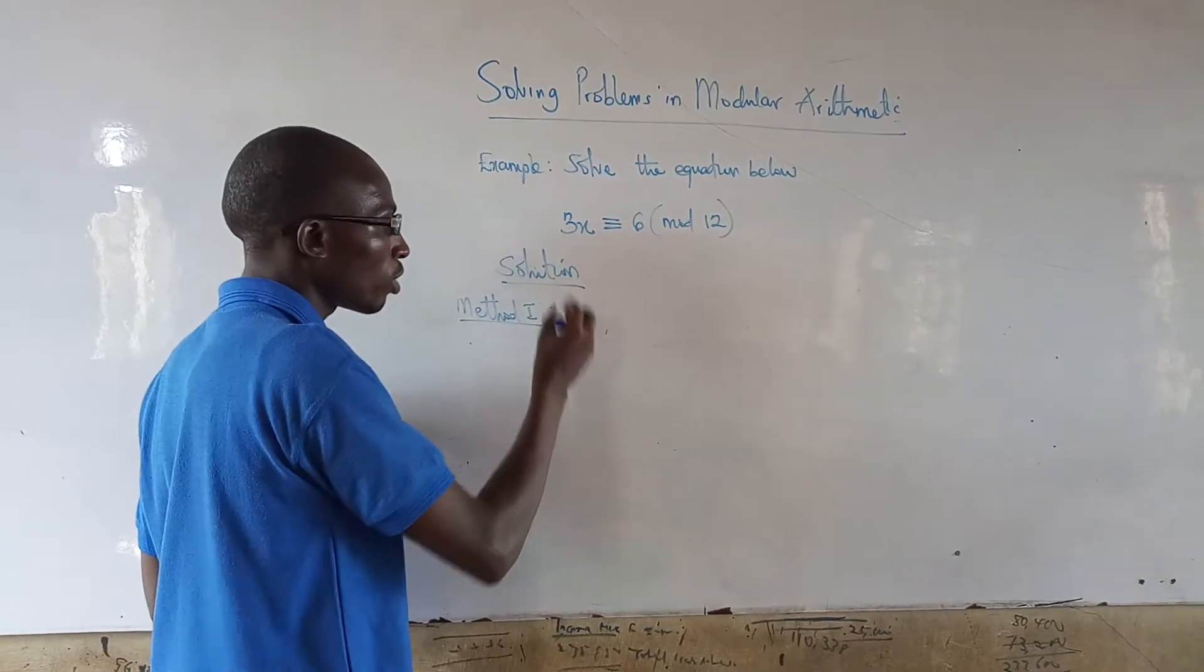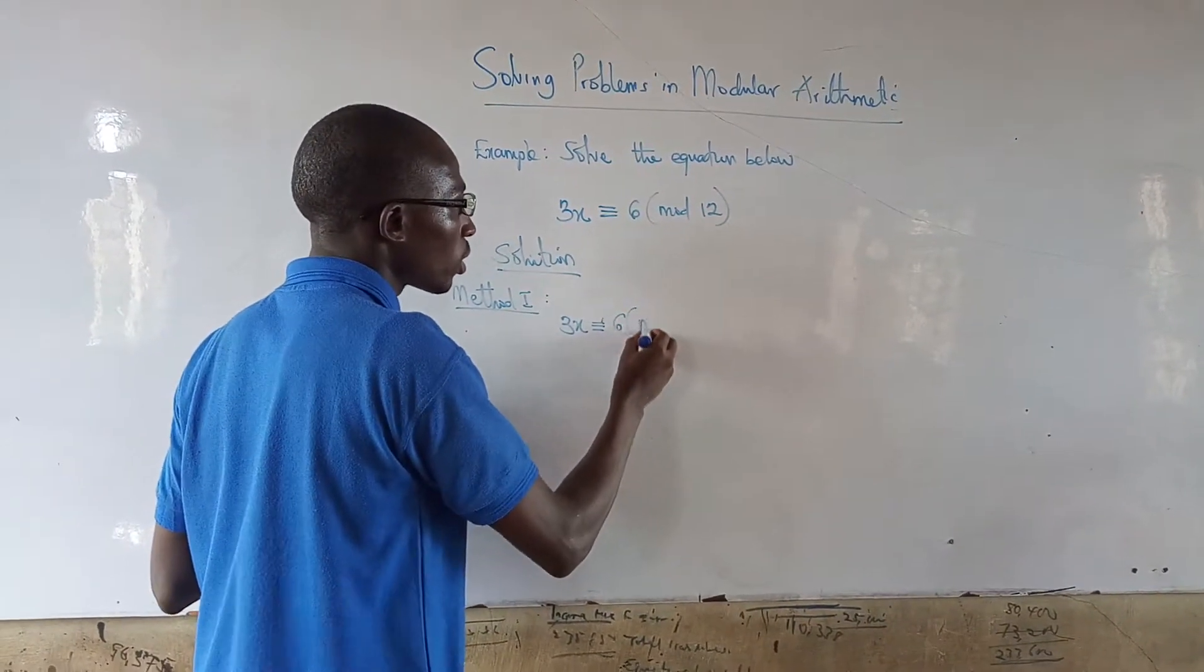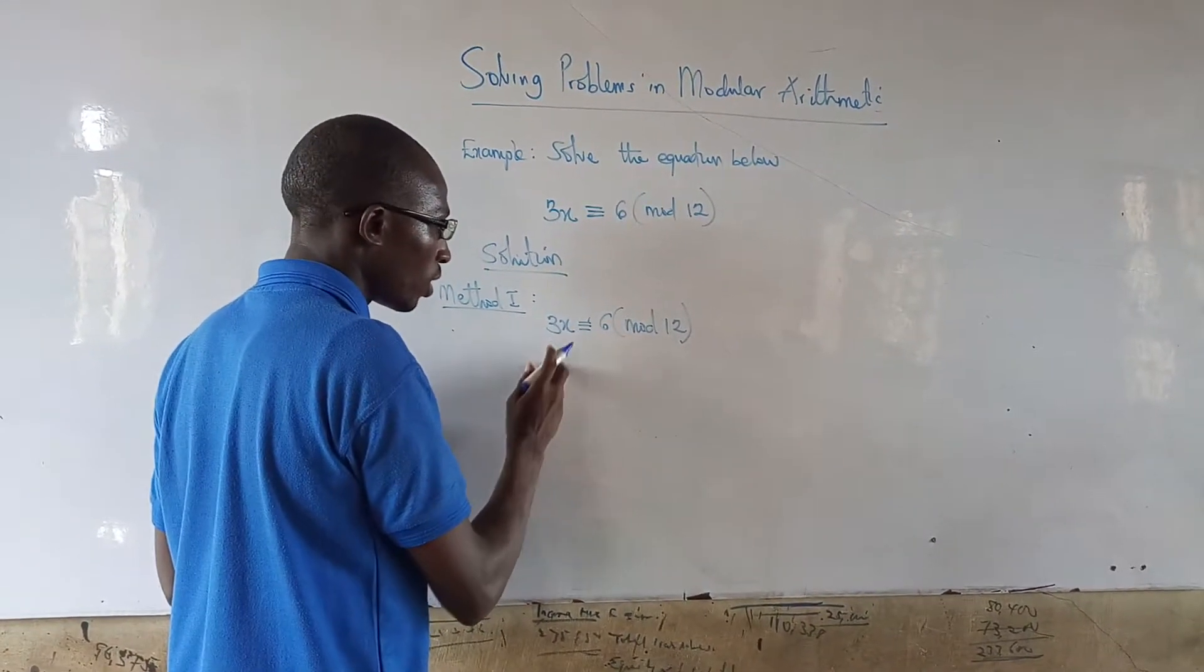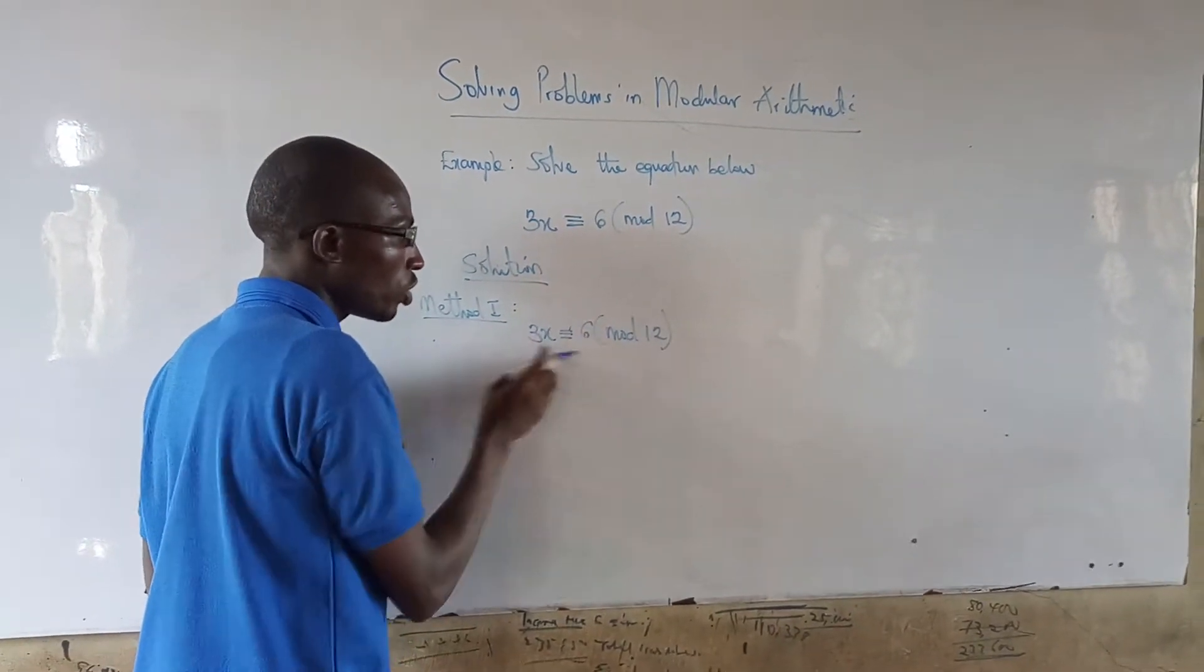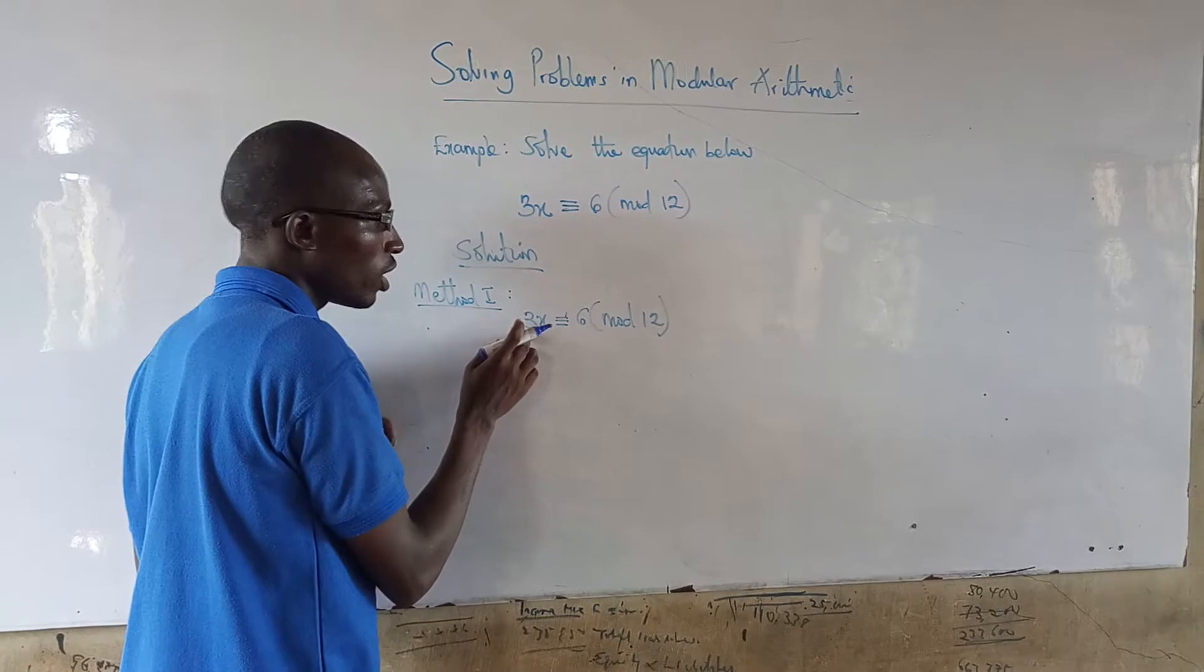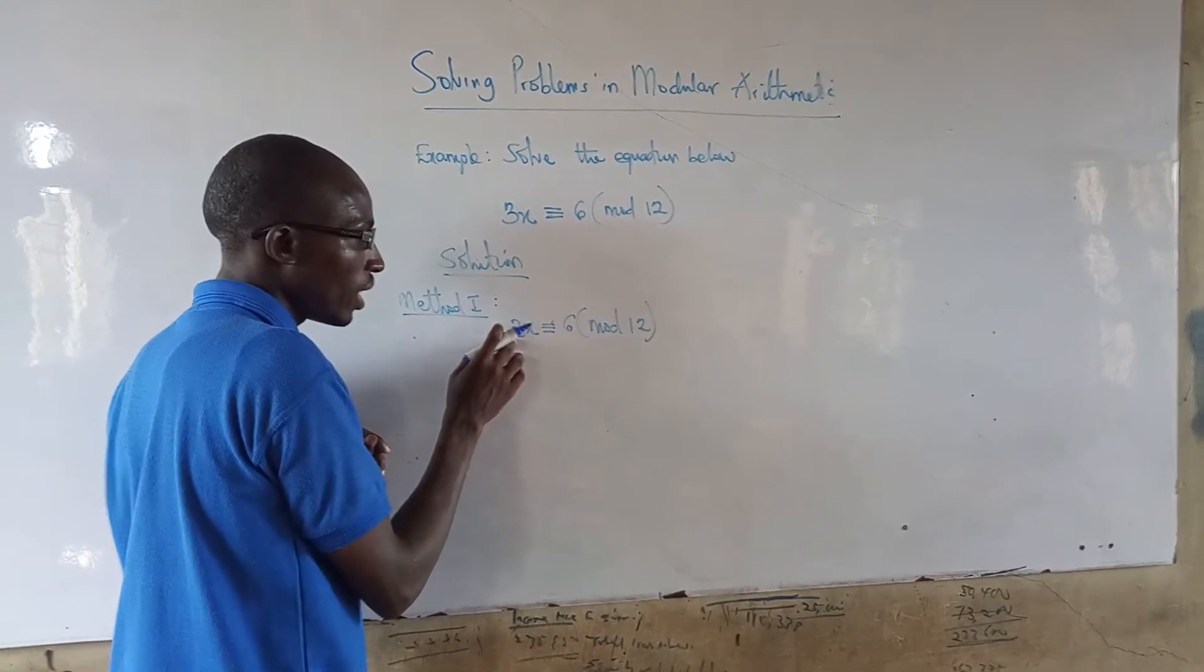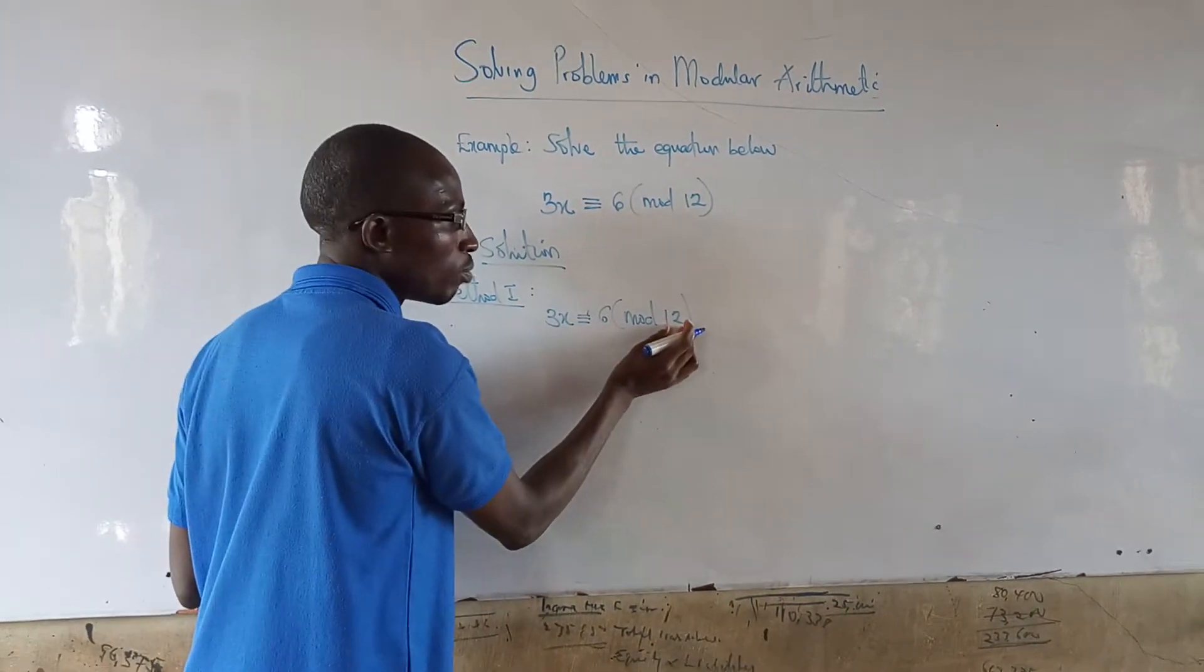The first method is 3x congruent to 6 mod 12. We can divide by 3, but the division of the congruent equation by 3 will not affect what is modulo.